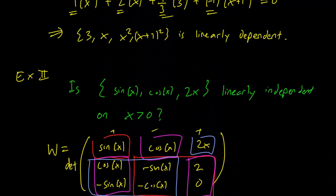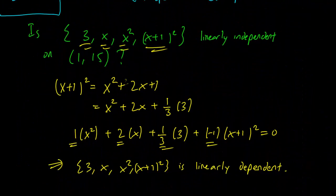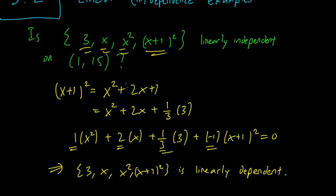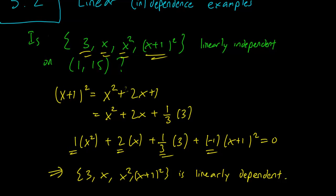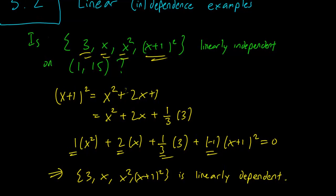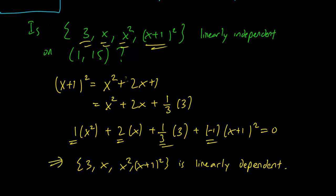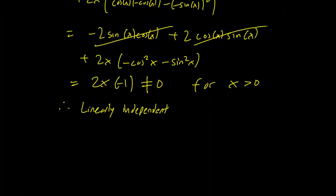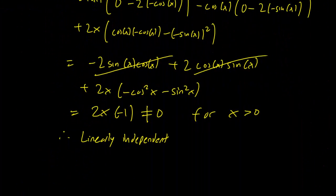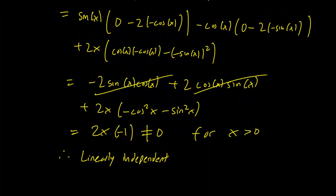So again, you could have done a Wronskian for the first case too, but it's just a bit more complicated with four functions — though it's definitely possible. And this is how you use a Wronskian to determine linear independence.